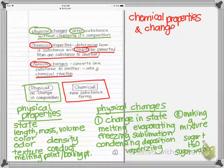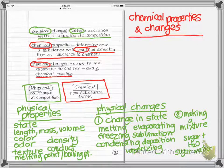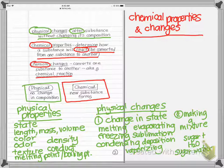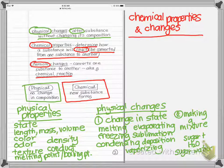You might wonder how to distinguish a chemical property from a chemical change — but that's never the question. The question is always whether something is a physical property or a chemical property, or whether something is a physical change or a chemical change. We need to decide if something is chemical or physical.